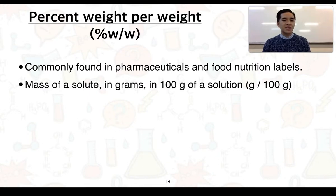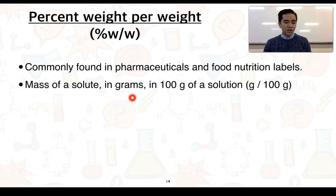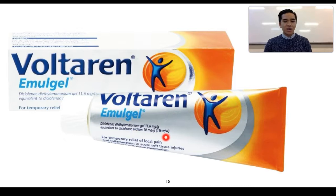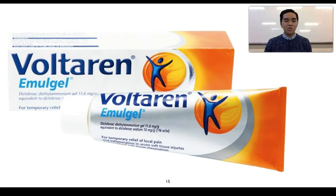Concentrations can also be represented as percent weight per weight, also found in pharmaceuticals and food nutrition labels. It's the mass of a solute in grams in every 100 grams of solution or mixture, with units of grams per 100 grams. Voltaren EmuGel, used to relieve local pain and reduce inflammation, has a concentration of 1% weight per weight — meaning 1 gram of the active ingredient per 100 grams of gel. This is also expressed as 10 milligrams per gram.